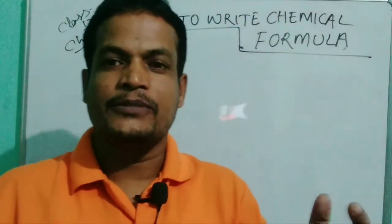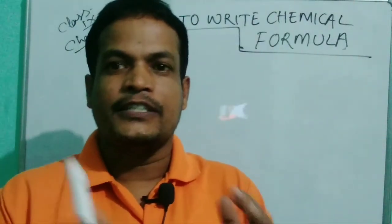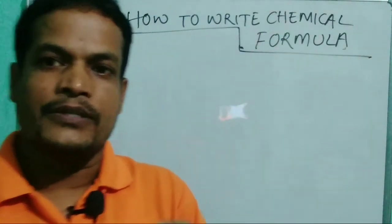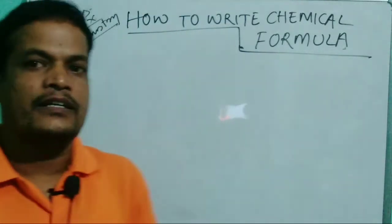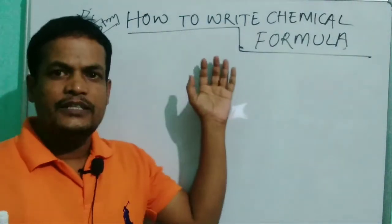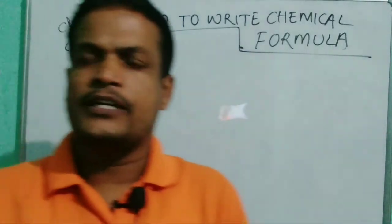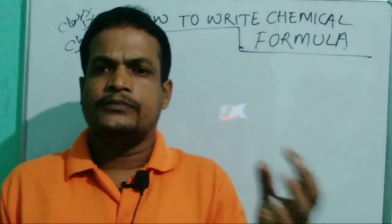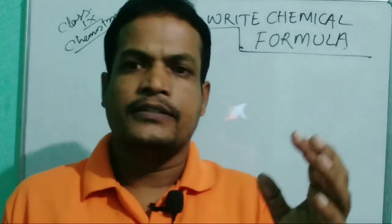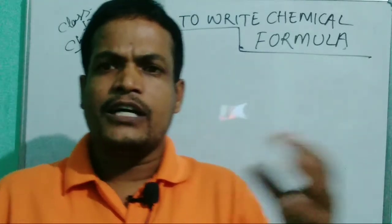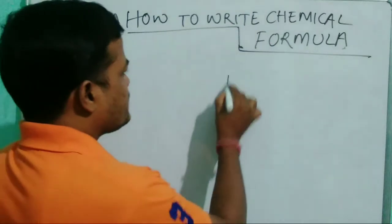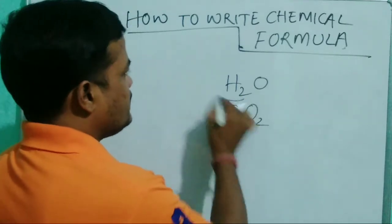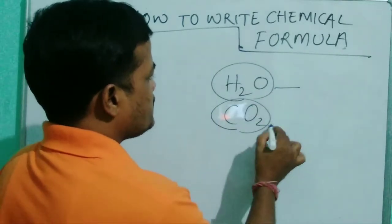Hello dear friends, today we are going to study how to write a chemical formula — that is the atoms and molecules chapter in Class 9 Chemistry. To know how to write chemical formulas, we can make different types of molecules or compounds. For example, the molecular formula of water is H2O, and carbon dioxide is CO2.